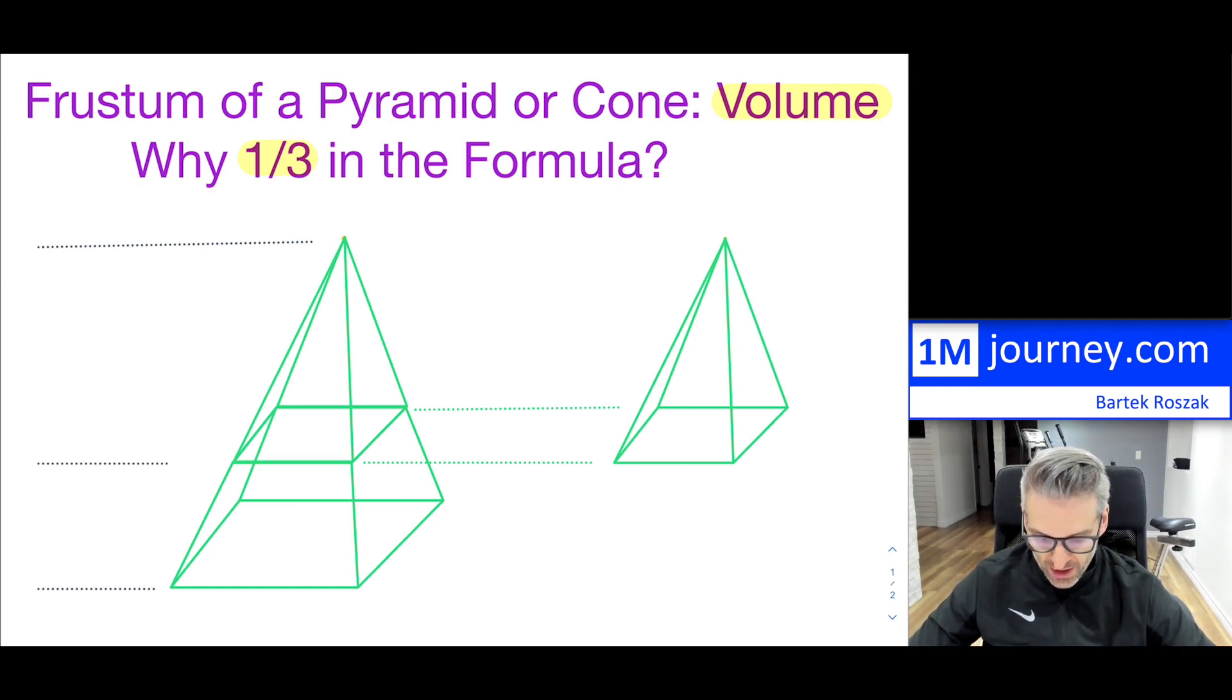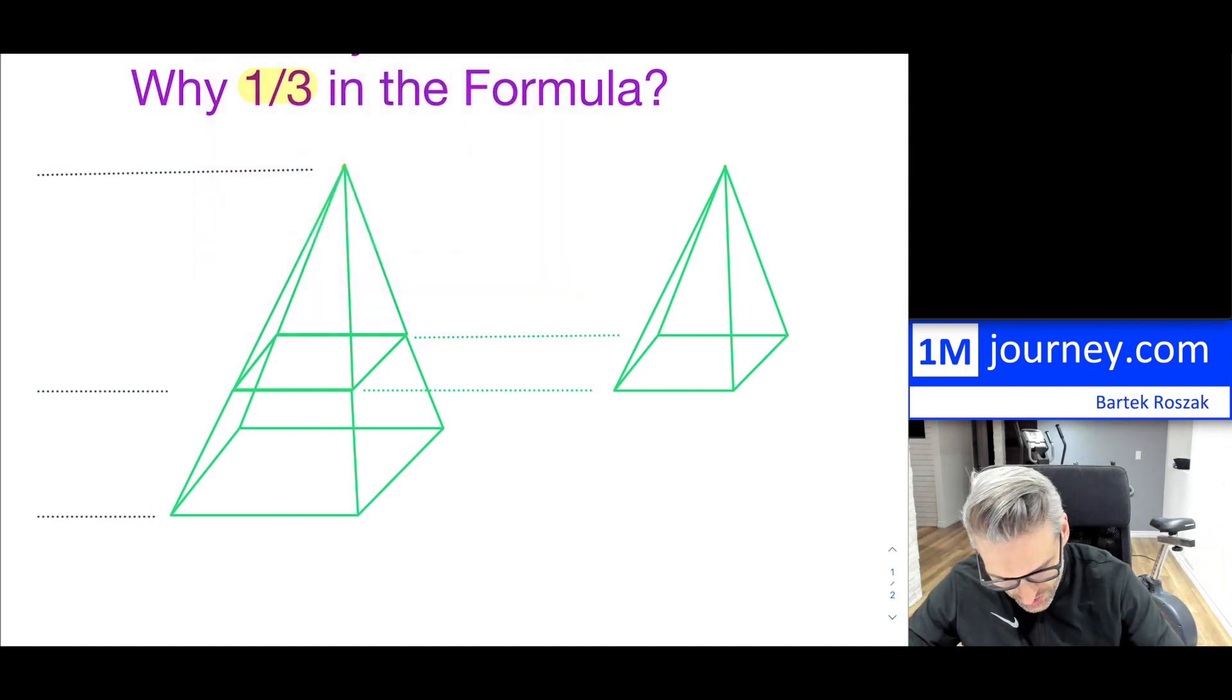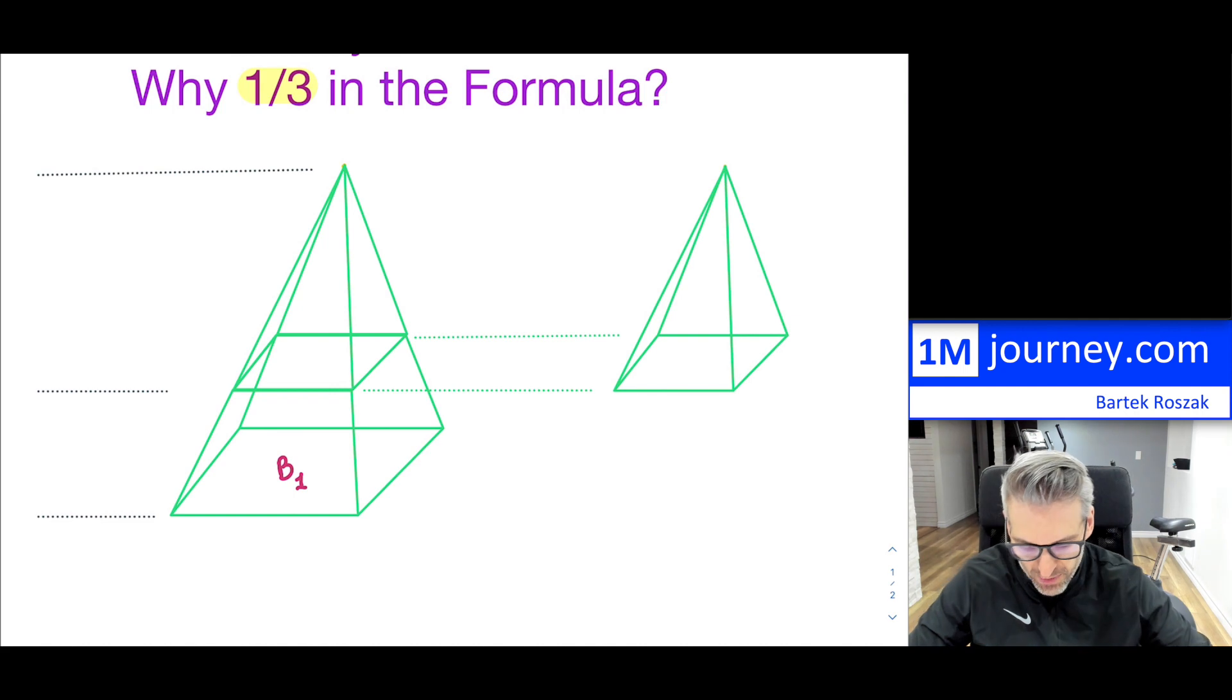So now the question is, why is there a one-third in the volume formula? So I'm not interested in deriving the entire volume formula for you, but you can certainly deduce from what I'm going to do here. So first of all, my assumption is that you do know that if you take any pyramid, so now I have actually two pyramids here. So let me kind of call this pyramid. So this one is going to have a base. I'm going to call this base one. So that's going to be the bottom big pyramid.